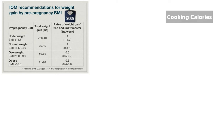We have to determine first the weight of the woman prior to pregnancy and then calculate what her BMI is. If the woman is underweight prior to pregnancy, she needs to gain 28 to 40 pounds in the whole duration of pregnancy, and about one pound per week. For women with normal weight, the total weight gain is 25 to 35 pounds, and a healthy weight gain is one pound per week.